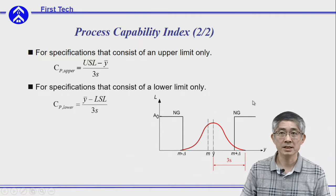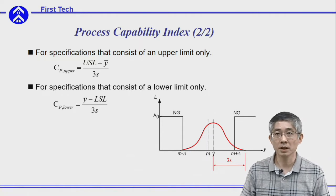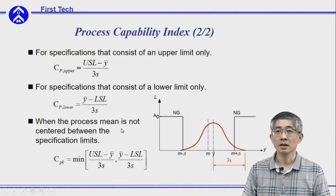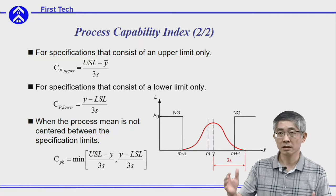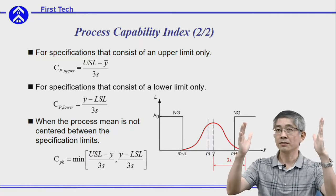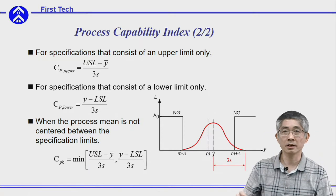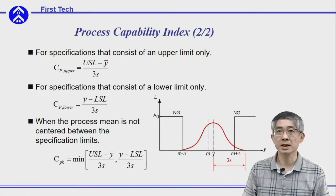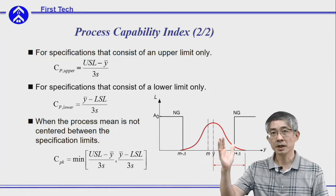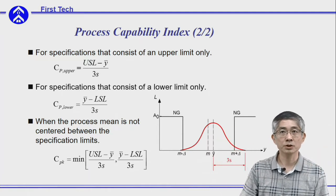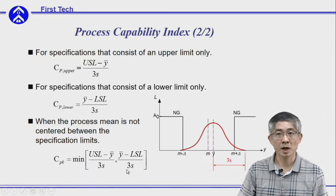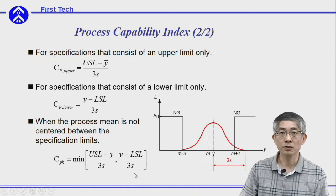Similarly, for a specification with a lower limit only, the corresponding equation is shown here. If a process must stay within both limits but the distribution is not centered exactly at the target, the corresponding process capability measure is called CPK. You consider both the upper limit and the lower limit as in the previous two criteria, find the corresponding value for each, and the minimum of those two values is CPK.